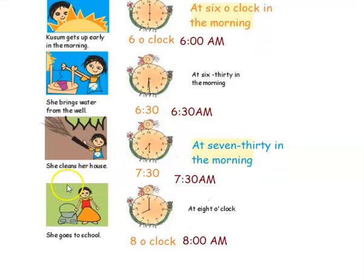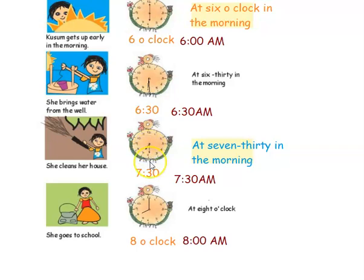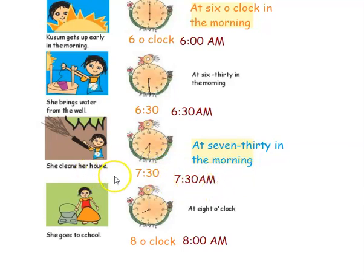The next activity is she cleans her house. The time shown on the clock: the minute hand is at 6 and the hour hand is at 7. Since the hour hand is at 7, we take it as 7, and the minute hand at 6 means 30. So it is 7:30. Since it is given in the morning, it is 7:30 a.m. At 7:30 in the morning she cleans her house.